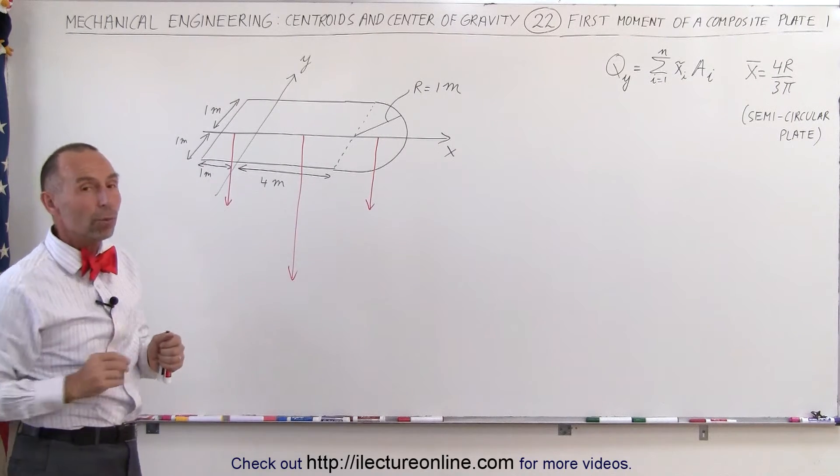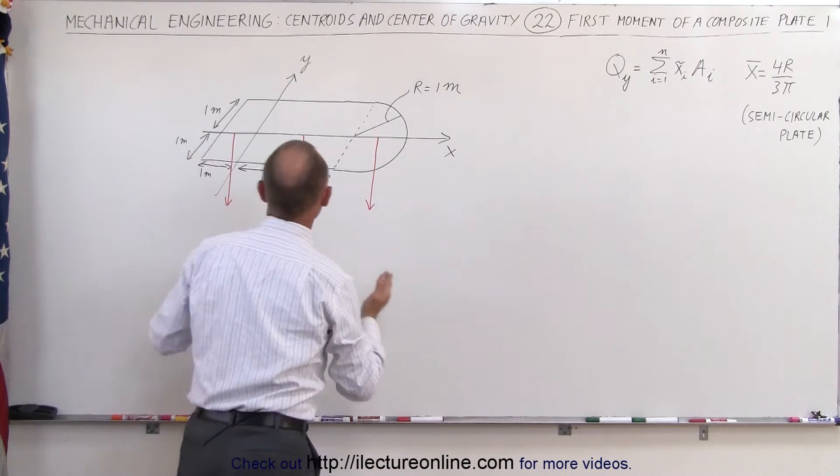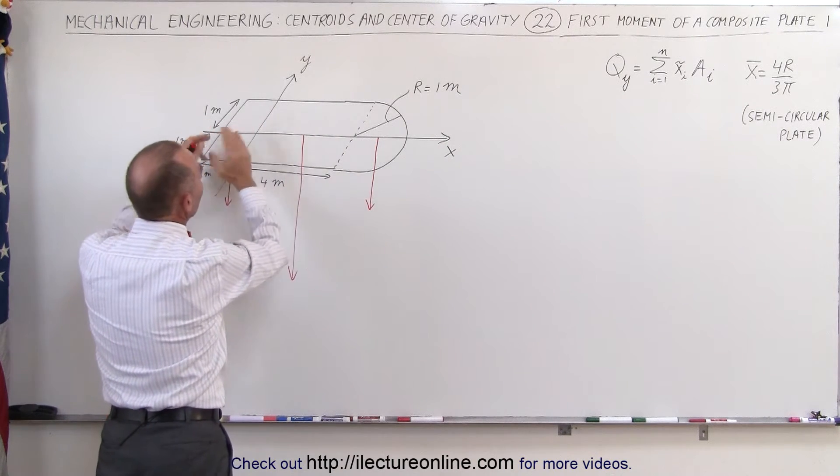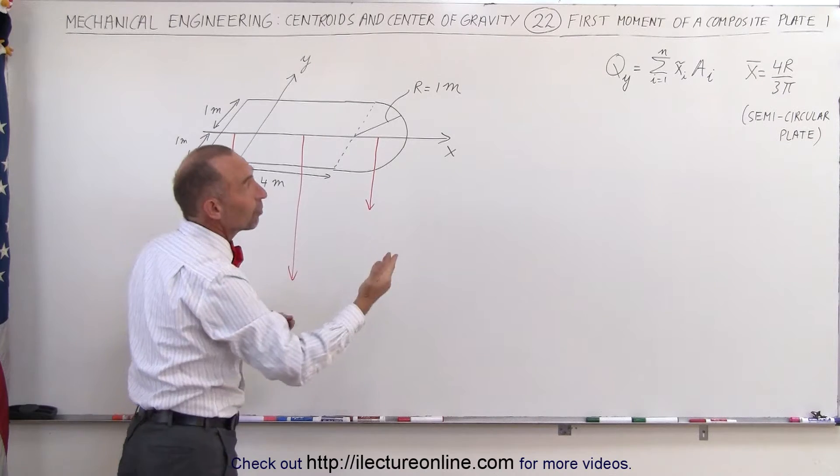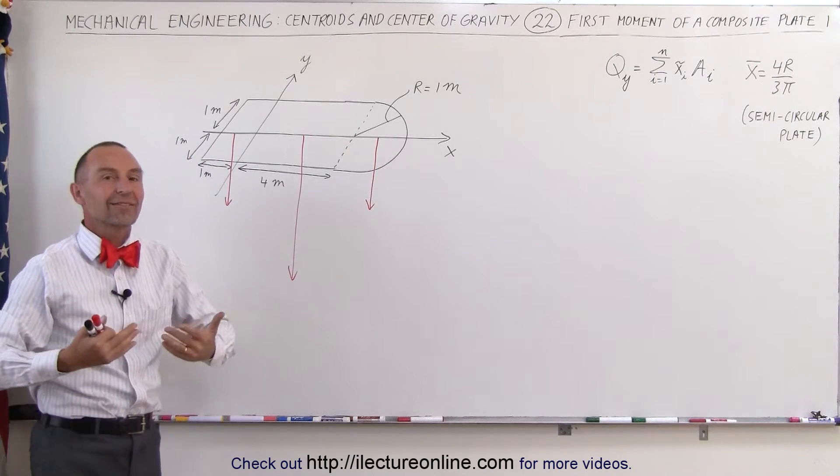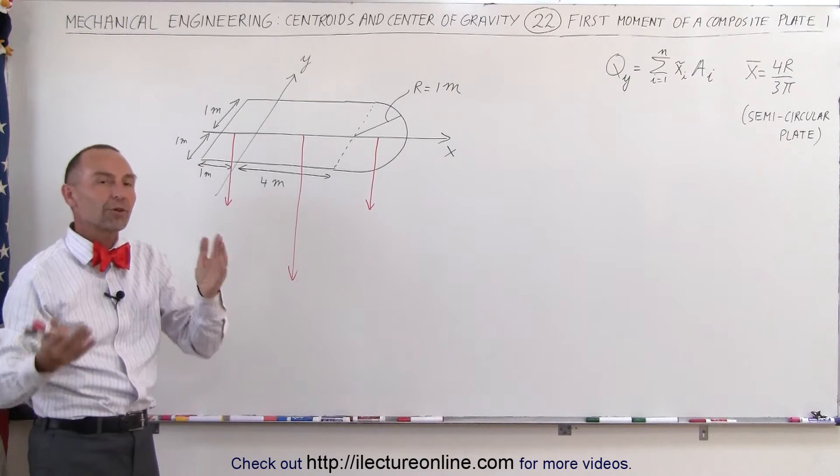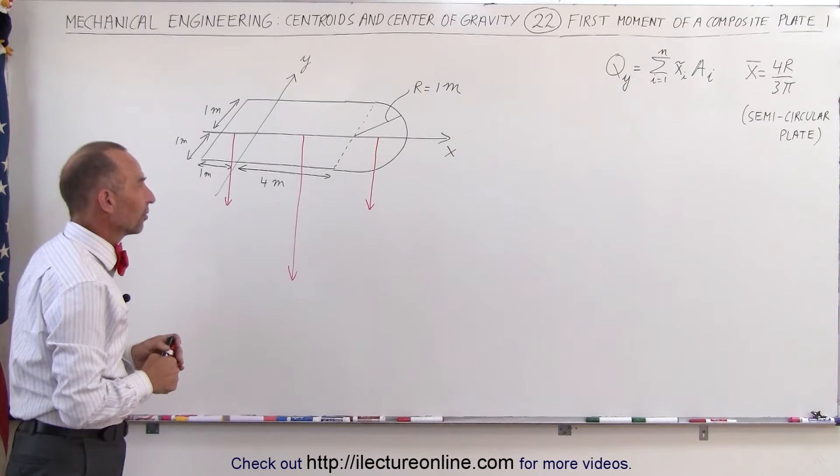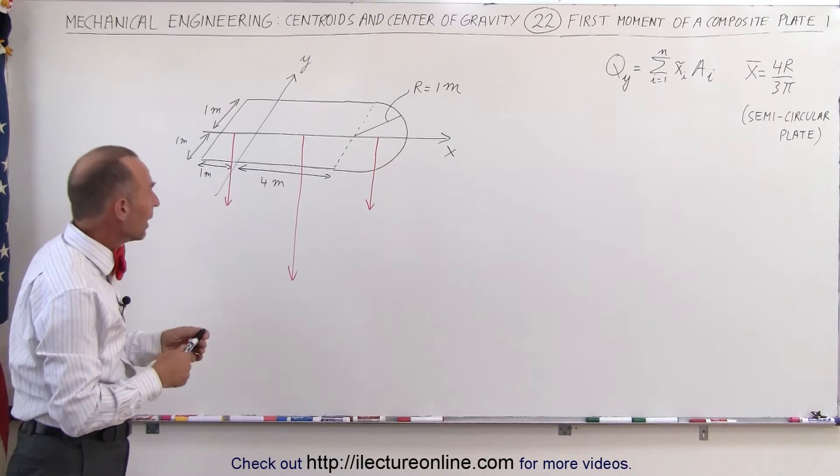But for convenience, we call it the first moment, which means we're simply going to take the x-coordinate of each of these three pieces, multiply times the area, sum them up, and that will give us the first moment about the y-axis, which in essence gives us the feel of which way the object would turn, what the torque would be or what the moment would be about the y-axis. Let's go ahead and do that.